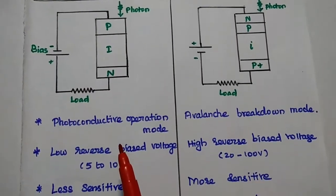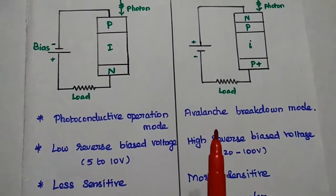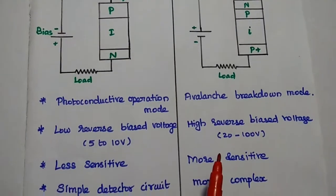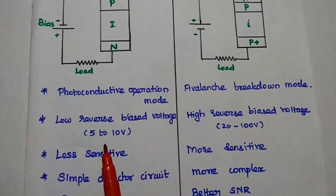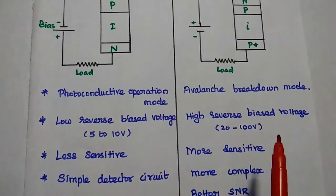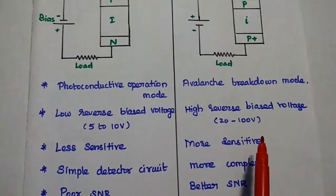Here the PIN diode is based on photoconductive operating mode. Here APD is based on avalanche breakdown mode. It requires low reverse bias in the range from 5 to 10 volts. Here high reverse biased voltage is required, that is from 20 to 100 volts.